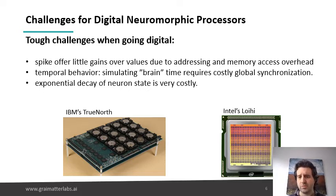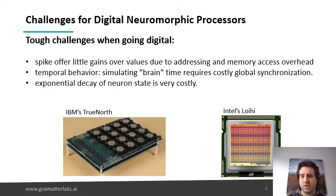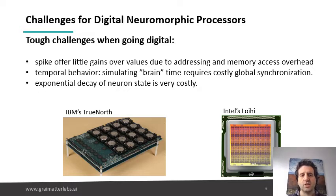And then there's another problem: the idea that neurons have this exponential state decay. Exponential state decay is actually very easy to do in analog — essentially, if you have a capacitor and you leave it be, the current starts decaying.